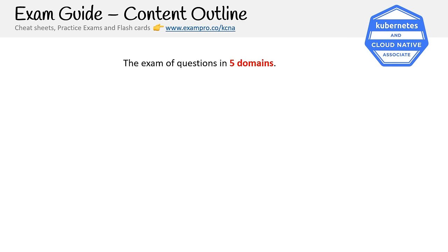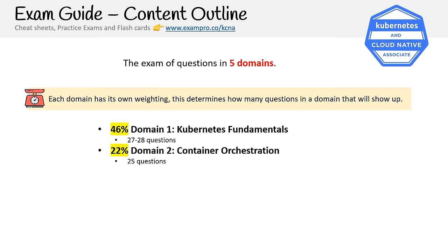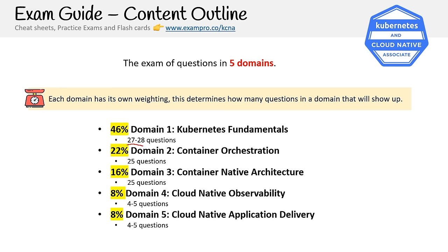The content outline has five domains, each with its own weighting that determines how many questions. The domains are: Kubernetes Fundamentals, Container Orchestration, Cloud Native Architecture, Cloud Native Observability, and Cloud Native Application Delivery. Each domain has a certain number of questions — you may see between 20-27 questions per domain due to decimal rounding — and most of the focus is on fundamentals, which is strongly centered on Kubernetes components.